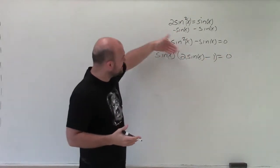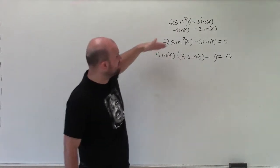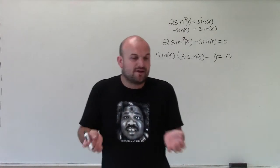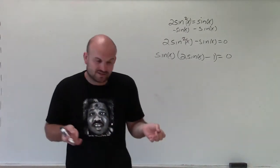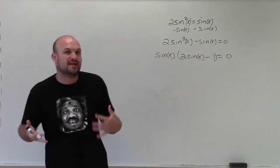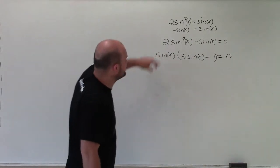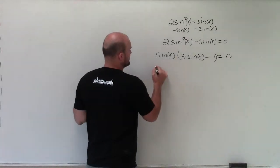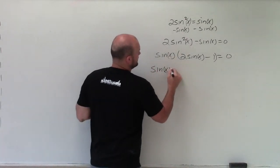So again, by factoring out a sine of x, which you can check your answer by multiplying that sine of x back through, you can see that now I have produced a product of factors. And that product of factors is equal to 0. So therefore, now I can apply the zero product property, which states if you have the product of factors equal to 0, then one of them has to equal 0. So we set them both equal to 0.